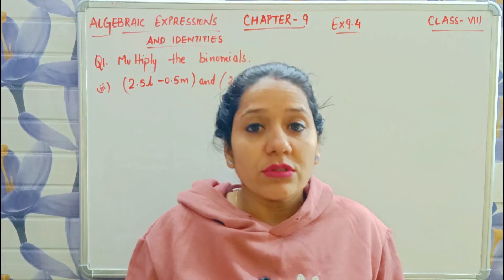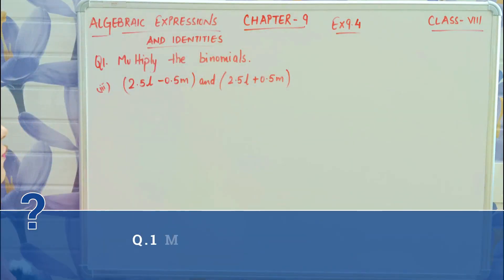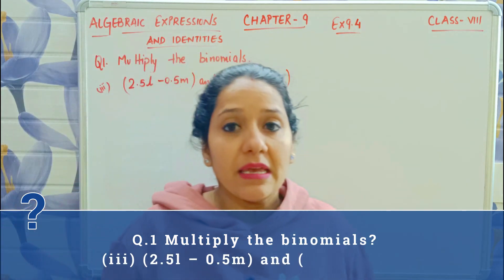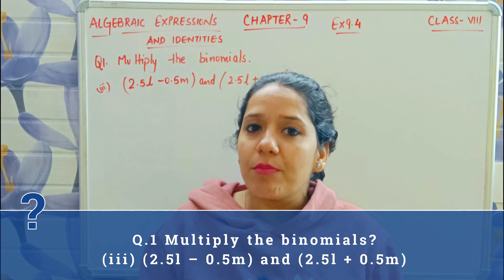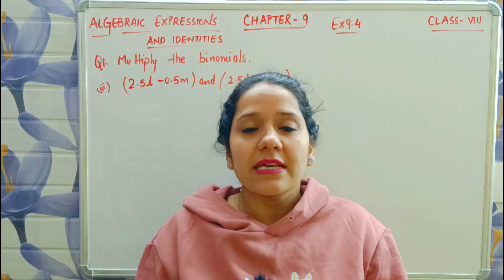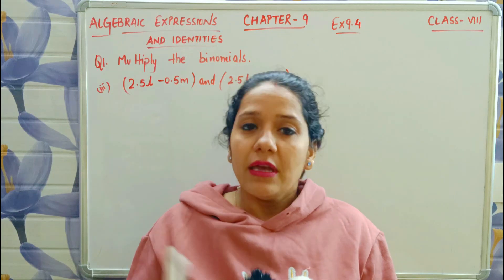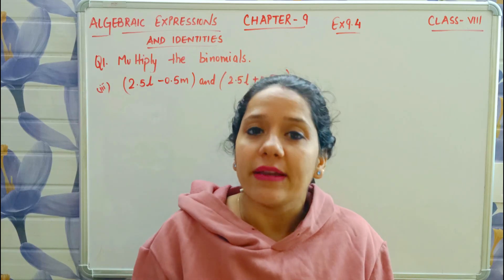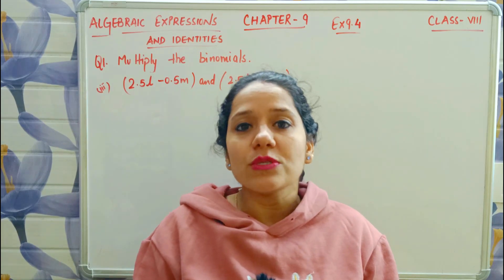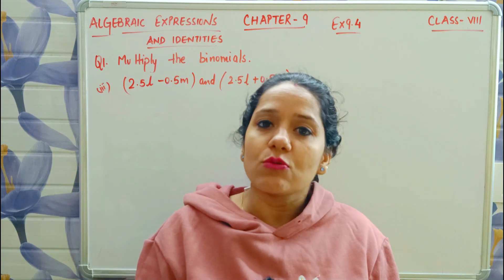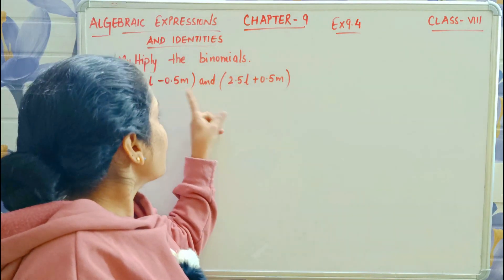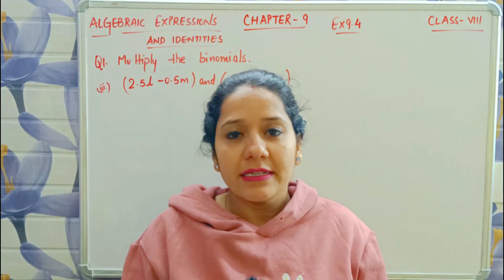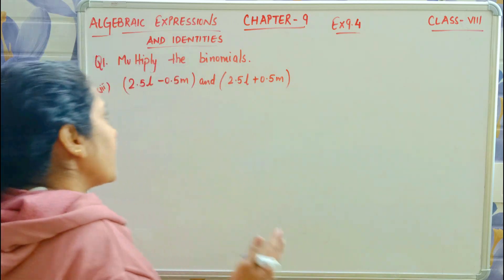Now let's do the third part: 2.5L minus 0.5M and 2.5L plus 0.5M. Children, in the introduction I told you about identities and where they can be used. Identity can be used in this question too, but this exercise is before identities, so we won't use identity here. But if you get such a question in the exam and you think a minus b, a plus b identity applies, then in the exam you can use that identity. But here we will multiply the same way as we did in first and second parts.